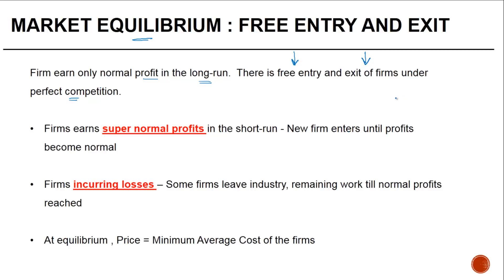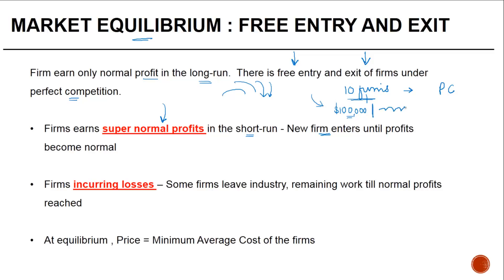Let's say there are ten firms in a perfect competition market. There could be situations where some firms are earning super normal profits in the short run. Let's say all ten firms were earning one hundred thousand dollars profit each. Because the business was so profitable, many people started jumping into the same business — new firms enter — and every time a new firm enters, this profit keeps on decreasing.